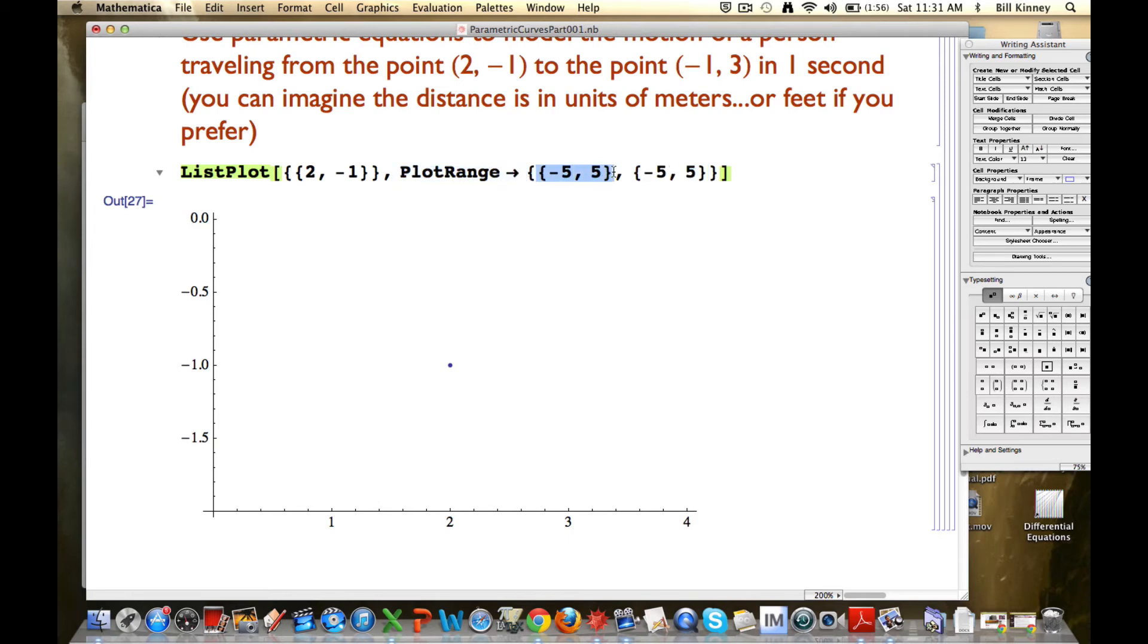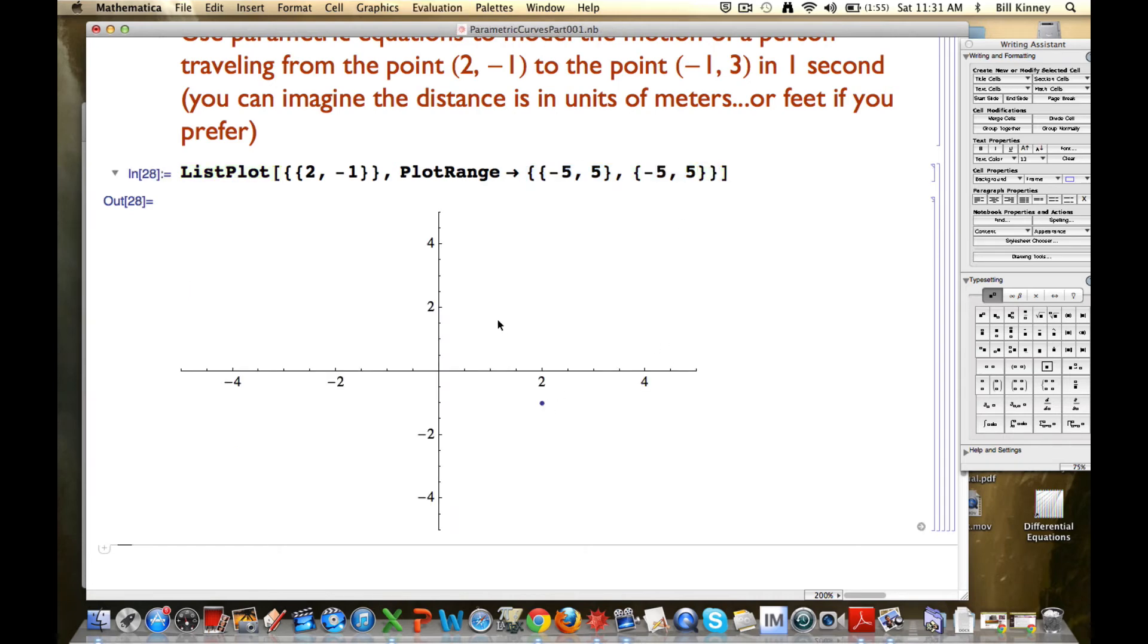This first list is going to say the x direction, the horizontal direction, goes from -5 to 5. The second list, separated by a comma, is going to say the vertical direction, the y direction, goes from -5 to 5 as well. And I need to put those two lists inside a bigger list when I use PlotRange like this. Now I can re-enter this, and I see my point in a coordinate system where the origin is where it's supposed to be.